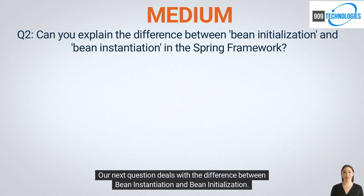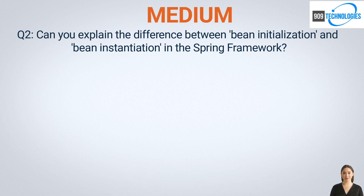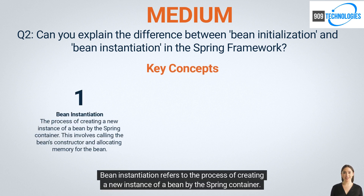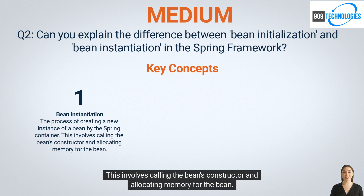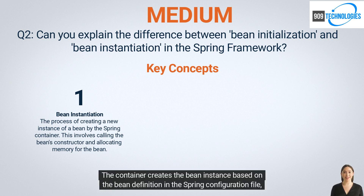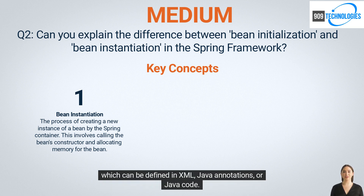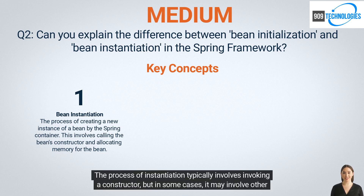Our next question deals with the difference between bean instantiation and bean initialization. Bean instantiation refers to the process of creating a new instance of a bean by the Spring container. This involves calling the bean's constructor and allocating memory for the bean. The container creates the bean instance based on the bean definition in a Spring configuration file, which can be defined in XML, Java annotations, or Java code. Instantiation typically involves invoking a constructor.